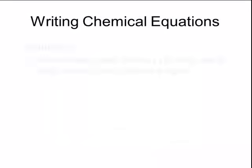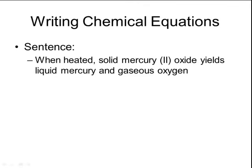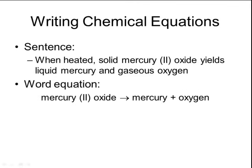There are different ways to write chemical equations. The first way is just a sentence — this is the form commonly used when speaking or reading a description out of a textbook. For example: when heated, solid mercury oxide yields liquid mercury and gaseous oxygen. But it takes a while to write out that whole sentence, so it can be converted into a word equation in order to reduce the time needed to describe the reaction.